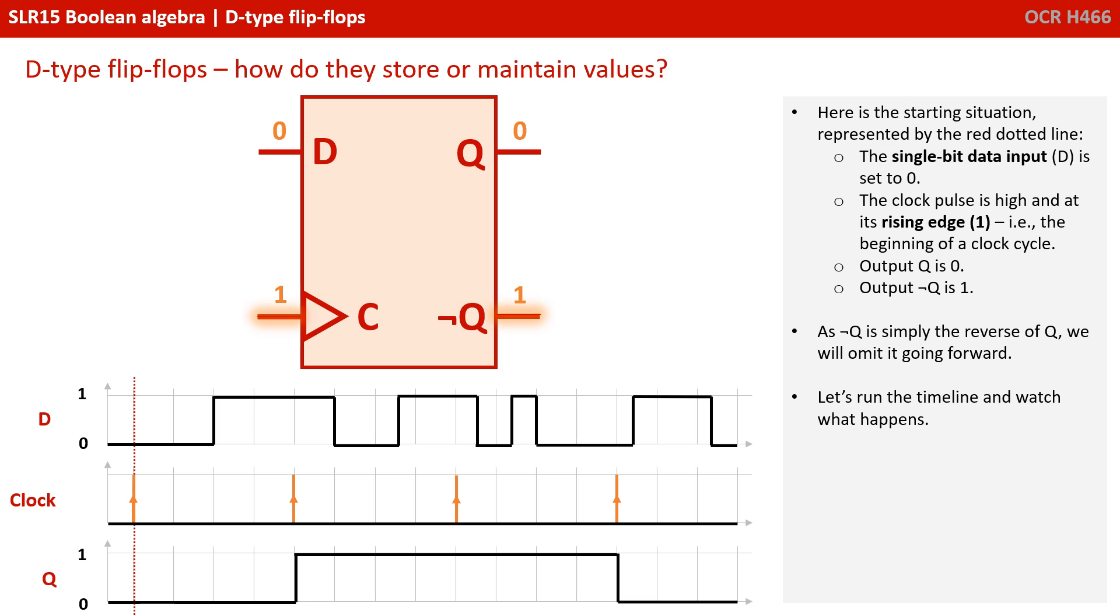As not Q is simply the inverse of Q, we're going to omit it going forward and ignore it from the timeline. Let's run the timeline and watch what happens.